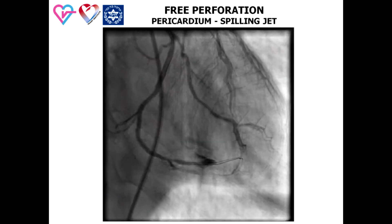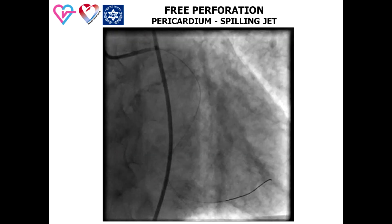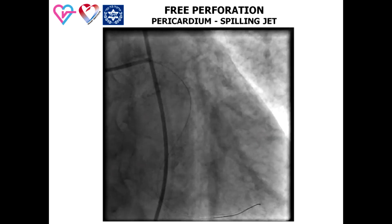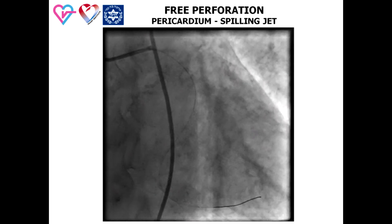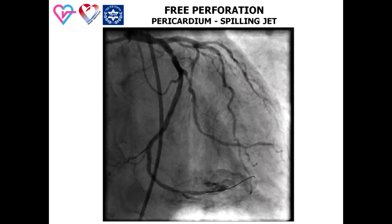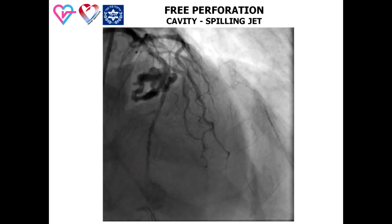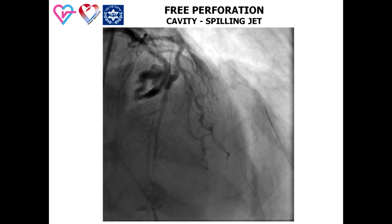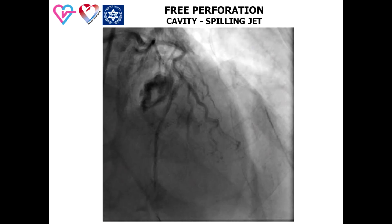This is an example of a distal pericardial spilling perforation with medium-volume leakage to the pericardial space. This next example shows large-volume cavity spilling directly to the left ventricle in a patient with a mid-LAD perforation.